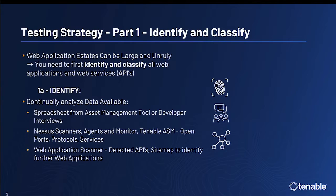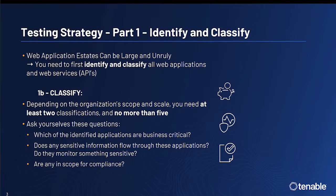We can also utilize previously run web application scans — looking for detected APIs and using the sitemap to identify further web applications connected to the ones we already know about. Depending on the organization's scope and scale, you need at least two classifications and no more than five. Ask yourself: Which applications are business critical? Does sensitive information flow through them? Do they monitor something sensitive, such as medical equipment? And are any in scope for compliance or regulation?